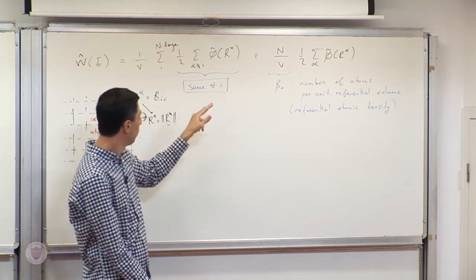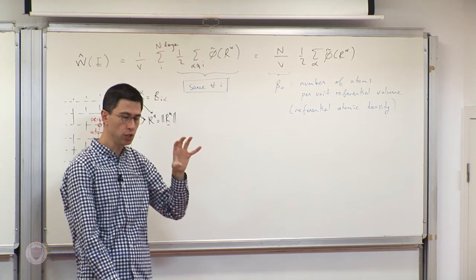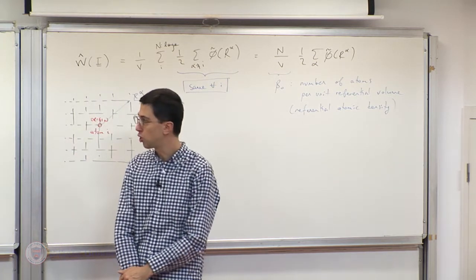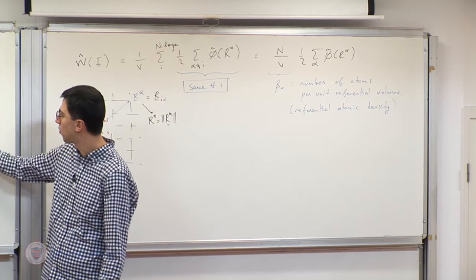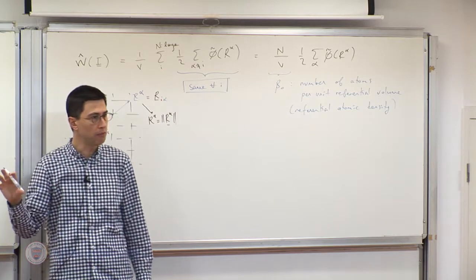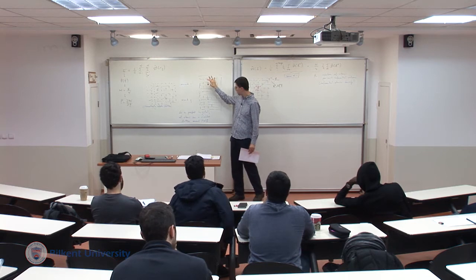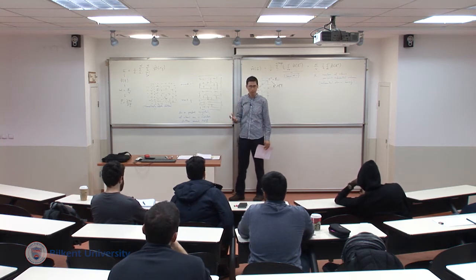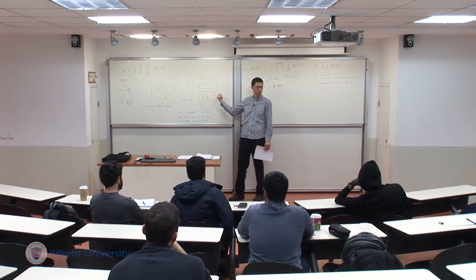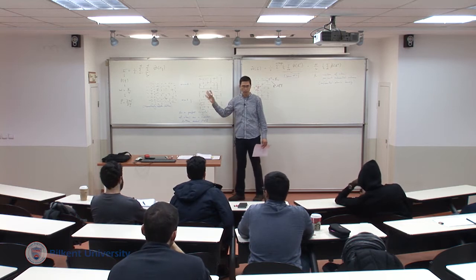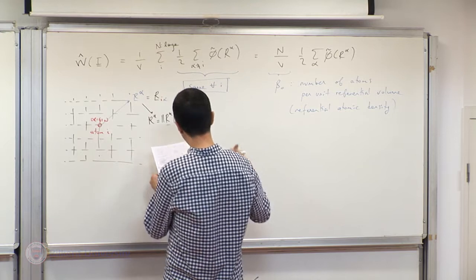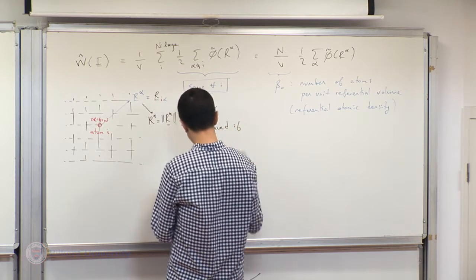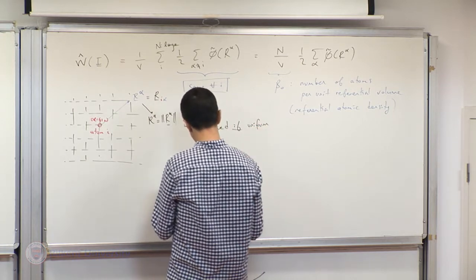After deformation, if there is a high degree of non-uniformity, the picture near atom i might differ significantly from near j. But in the context of the Cauchy-Born hypothesis, because you project the deformation uniformly onto the microscale, if this argument initially holds it will also hold after deformation. The Cauchy-Born hypothesis preserves this argument — it is preserved if uniform deformation is assumed.